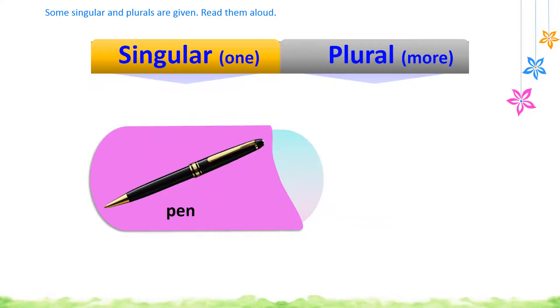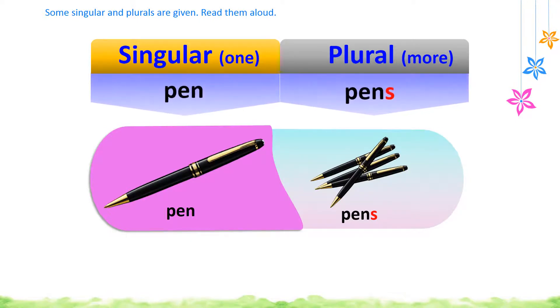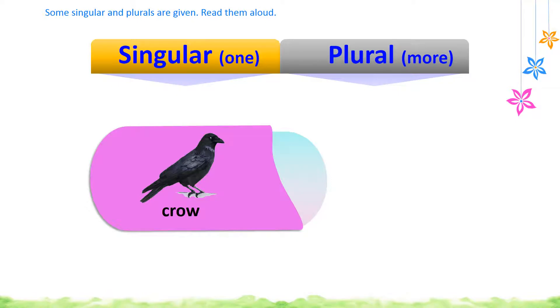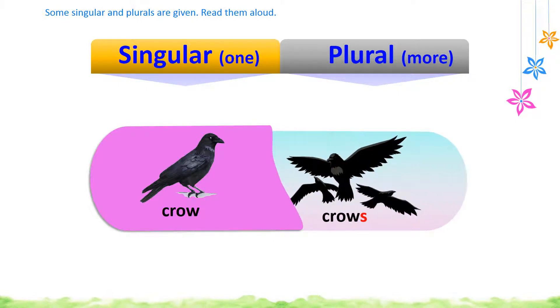Pen is a singular. Pens are Plural. Pen, Pens. Crow is a singular. Crows are Plural. Crow, Crows.